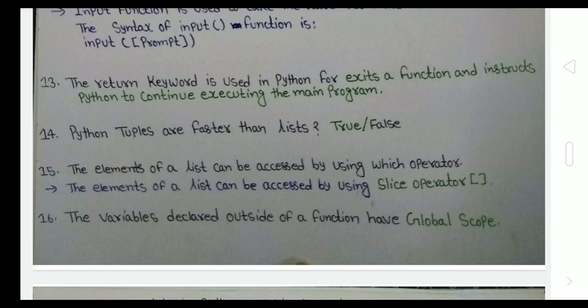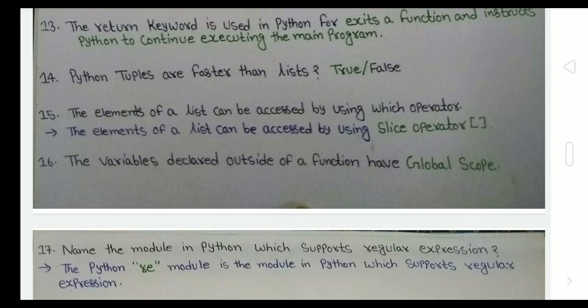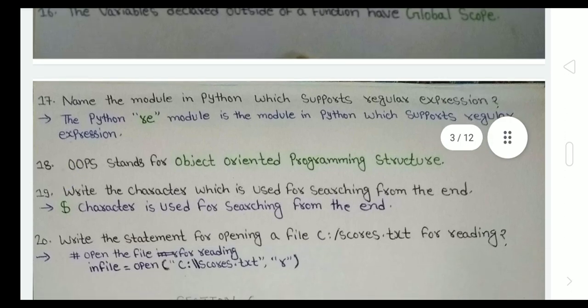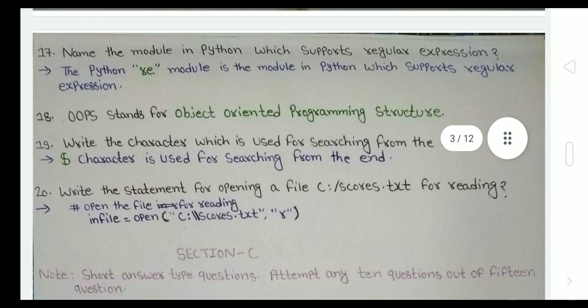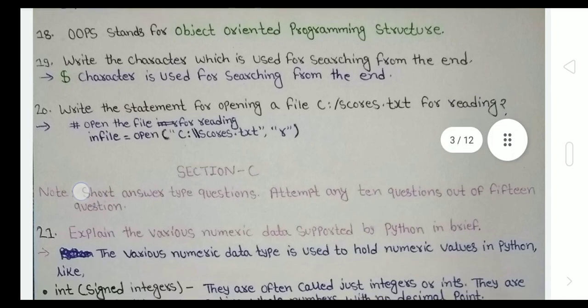The elements of a list can be accessed by using which operator? Slice operator. The variable declared outside of a function has global scope. If the question comes, variable declared inside a function has local scope. Name the module in Python which supports regular expression. The re module is the module in Python which supports regular expressions. OOPS stands for Object Oriented Programming. Write the character which is used for searching from the end, dollar sign.